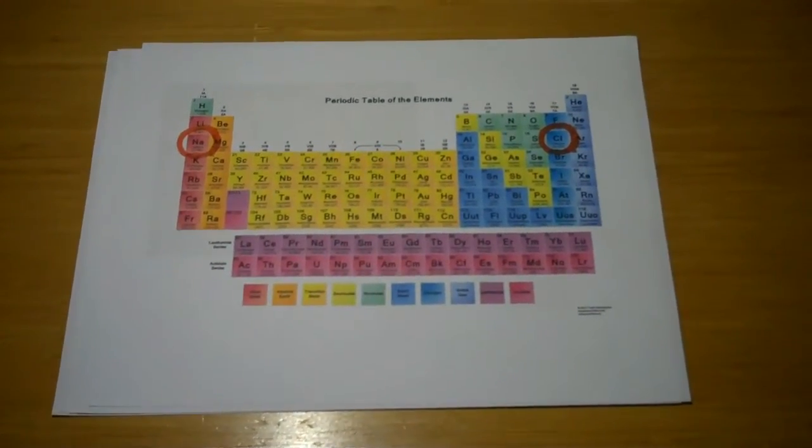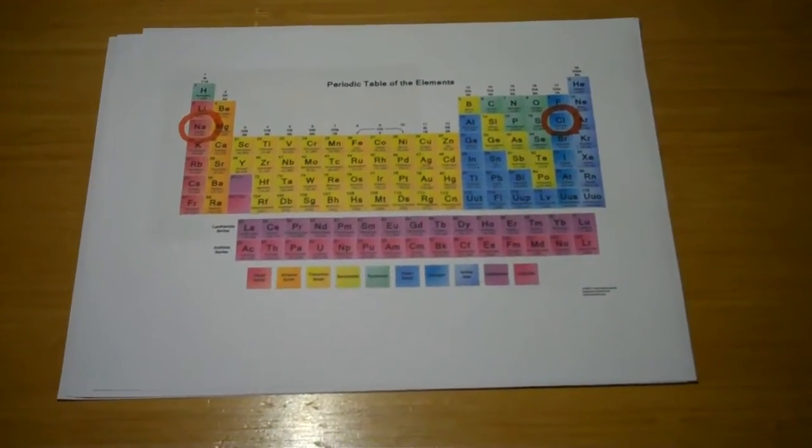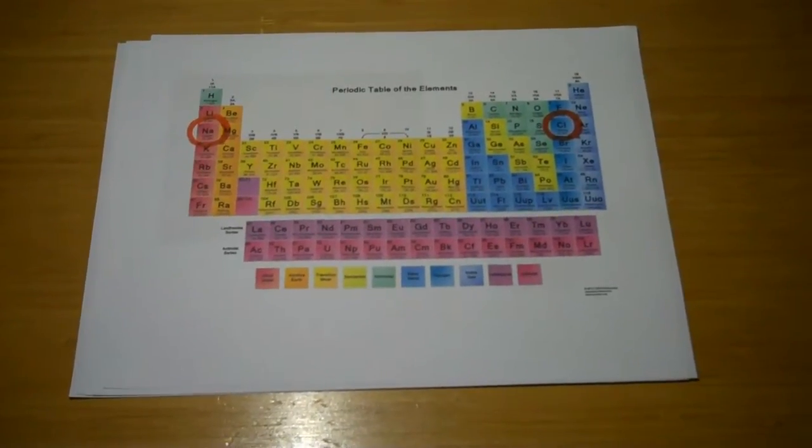Sodium Chloride, also known as NaCl, is a colorless, odorless ionic compound that can be used for many different things.